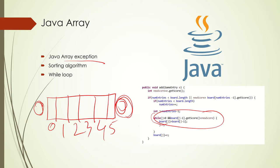That exception is called ArrayIndexOutOfBoundsException. You might be familiar with it as a Java programmer, but you might not know exactly how it occurs. To avoid it, you need to work with array length. Here you can see we are working with array length in the code.